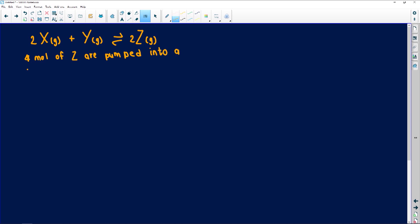Pumped into a 5 cubic decimeter container at a temperature of 650 Kelvin. So after some time, equilibrium is established. The word established just means reached. And at equilibrium, we have 0.5 moles of Y present.